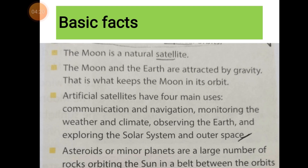Artificial satellites have four main uses: communication and navigation, monitoring the weather and climate, observing the earth, and exploring the solar system and outer space. Communication means sending and receiving information. Navigation means directing — telling the direction of something — used by ships and aircraft.